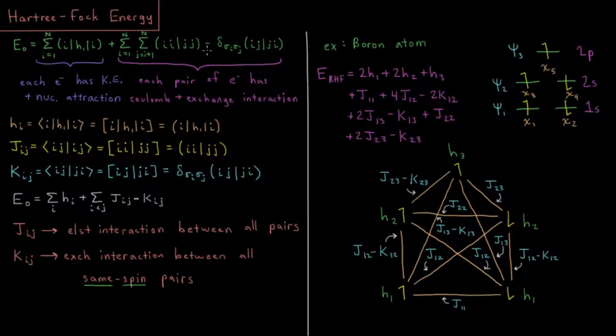Similarly for this Coulomb integral, where we have electron one in spin orbital i and electron two in spin orbital j, would be Jij, this Coulomb integral.